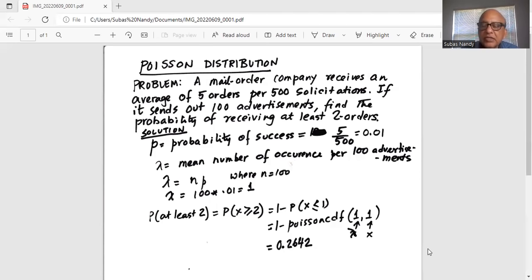So it is 1 minus, and then I go to my calculator which is TI-84. I do second VARS and I scroll down. I scroll down to Poisson. Poisson, in this case I want CDF. Why? Because I want to add from 0 to 1, which is the complement of the event x greater than 2.